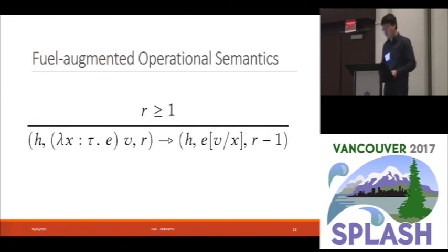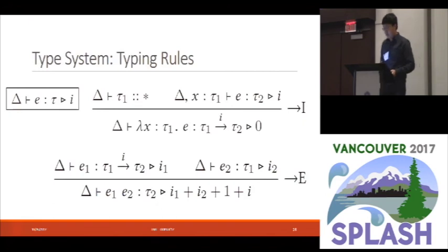The runtime behavior of Timo is modeled by what we call fuel augmented operational semantics. So one feature you don't always see otherwise is that a runtime configuration has a number R, which we call a fuel. A beta reduction as shown in this rule will reduce the amount of fuel by one unit. And if our starting fuel is less than one, then the evaluation, then we run out of fuel and the evaluation is stuck.